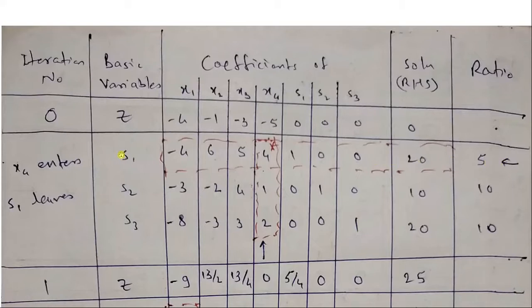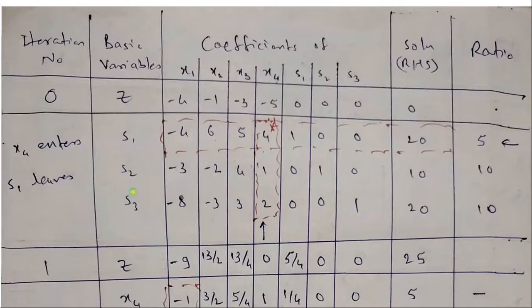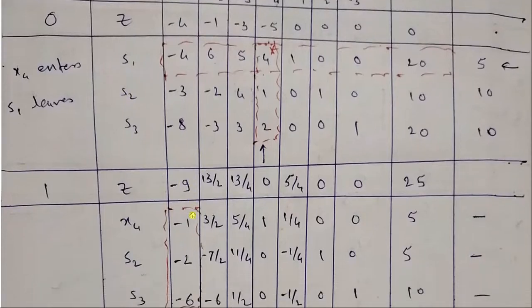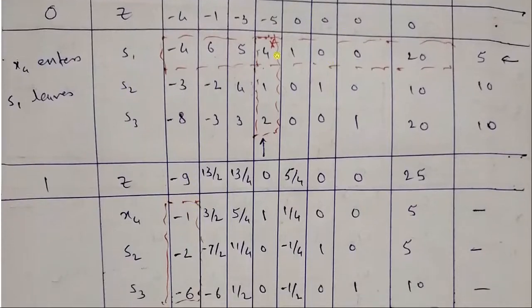Corresponding variable s1 leaves the table. In iteration number 1, we will replace s1 by x4, s2, s3 as it is. Here, pivot element is 4. We will divide this pivot row by 4. So it is minus 1, 4, 6 by 4 is 3 by 2, 5 by 4, 1, 1 by 4, 0, 0 and 5.